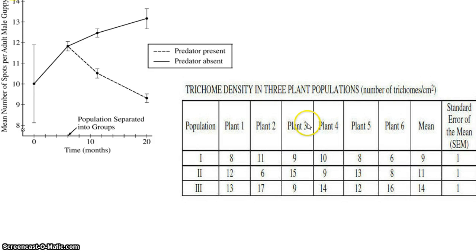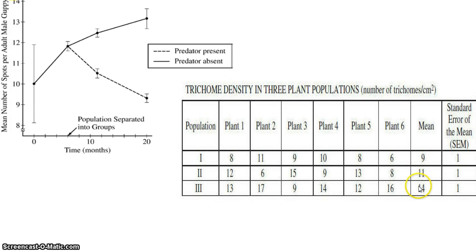This chart on the right is a second question where they actually had you graphing. They told you about things called trichomes, which are found on plants, and they counted how many there were. They had three populations of plants and asked you to use the averages. There were six plants in the first population — the average was 9. The second had 11 plants — the average was 11. And in the third, the average was 14. So these were the averages for six plants from each population. Looking at this, it would seem population one had the lowest average, then two, then three.